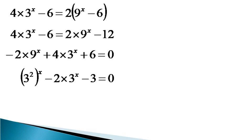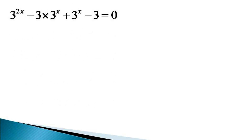This can be written as 3 raised to the power 2x minus 2 times 3 raised to the power x minus 3 equals 0. We observe that this is a quadratic equation in 3 raised to the power x, and we solve it by factorization, expressing the equation as 3 raised to the power 2x minus 3 times 3 raised to the power x plus 3 raised to the power x minus 3 equals 0.